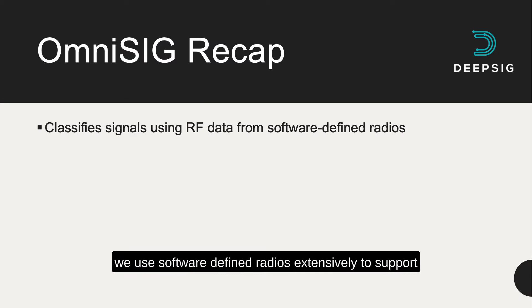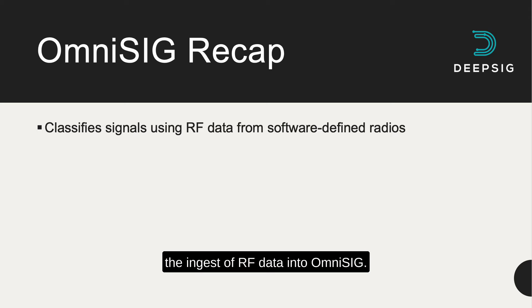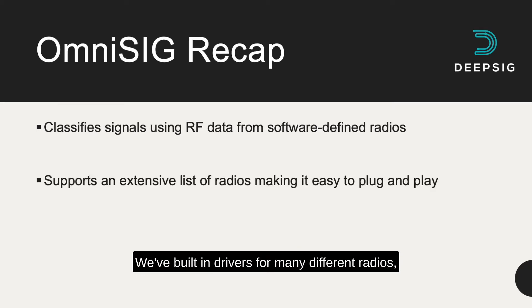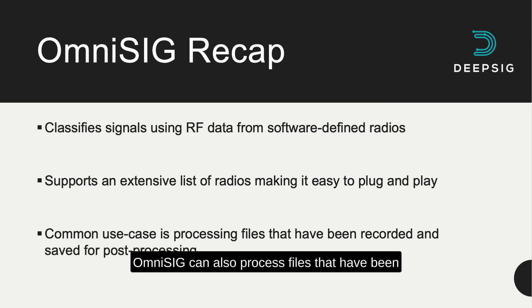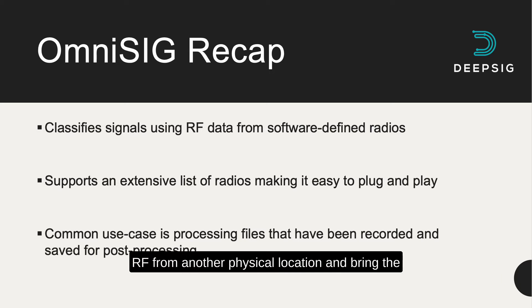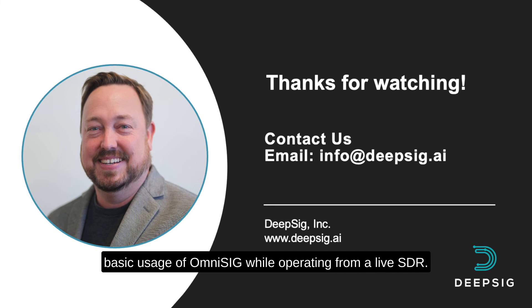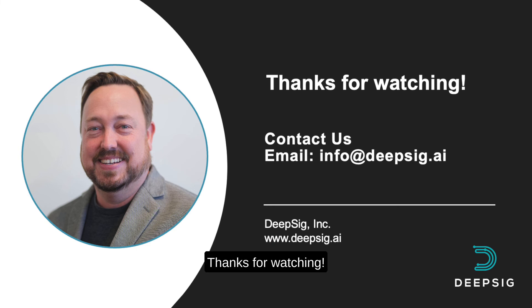To recap, we use software-defined radios extensively to support the ingest of RF data into OmniSig. We've built-in drivers for many different radios, making it easy for users to plug in a radio and start working quickly. OmniSig can also process files that have been recorded to disk, allowing users to collect RF from another physical location and bring the RF samples back for later processing. Come check out our next video while we go through the basic usage of OmniSig while operating from a live SDR. Thanks for watching.